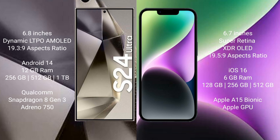The Samsung Galaxy S24 Ultra comes with 12GB RAM and 256GB, 512GB, or 1TB internal storage, with a Qualcomm Snapdragon 8 Gen 3 processor and Adreno 750 GPU. The iPhone 14 Plus comes with 6GB RAM and 128GB, 256GB, or 512GB internal storage, with an Apple A15 Bionic processor and Apple GPU.